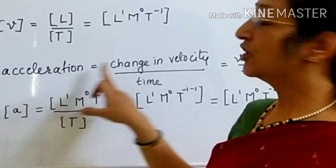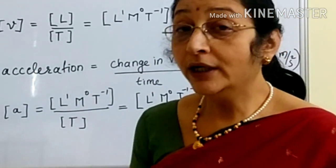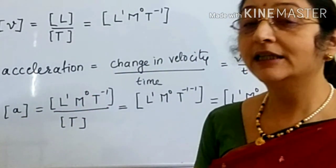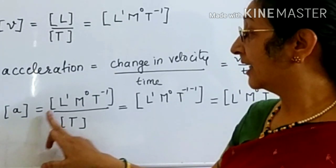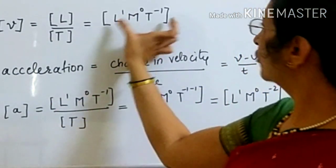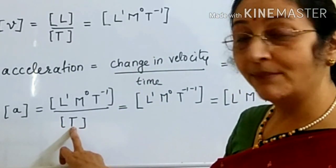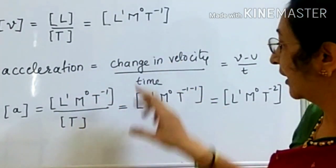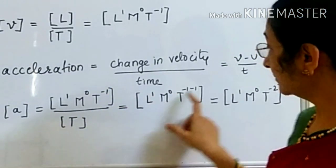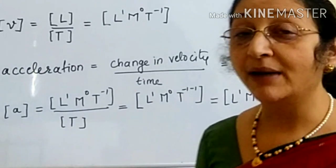Now we go for acceleration. Acceleration is change in velocity upon time, with formula V minus U upon T. The unit for acceleration is meters per second squared. Now we write the dimension for acceleration A. The dimension for V minus U is the same as velocity: L to the power 1, M to the power 0, T to the power minus 1, upon time T. Shifting T to the numerator gives T to the power minus 1 minus 1, so we get L to the power 1, M to the power 0, T to the power minus 2. This is the dimensional formula for acceleration.